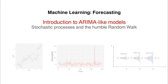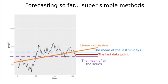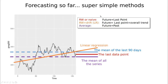Hi everyone, today we're going to talk about ARIMA-like models starting with the humble random walk. Let me summarize what we have covered so far. We started with super simple methods, trying to predict the future using very simple ideas. For instance, the random walk idea was predicting the future as the last point. This seems very hard but in the stock market case we saw that this was really accurate. We also covered the random walk with drift, which was a kind of linear regression capturing the last value plus some overall trend. We also covered the average value, taking the average of the whole series or a window of say 90 days, predicting that the future is going to be on average the same as before.